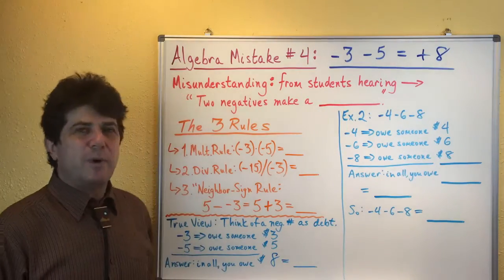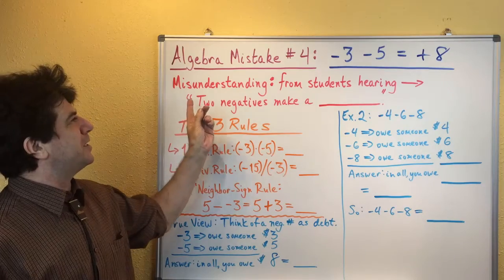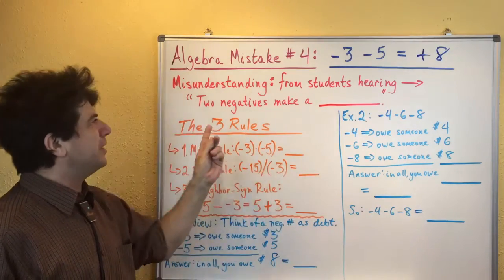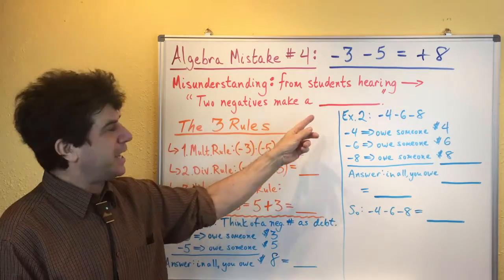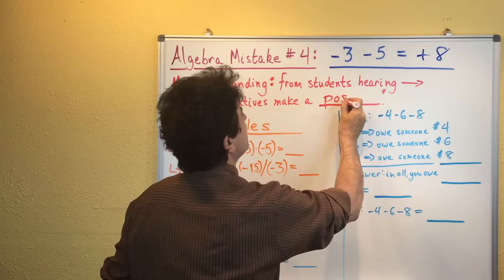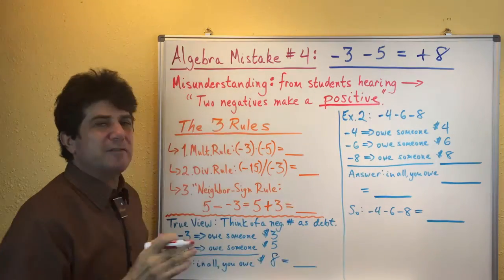Now why would students be tempted to think that? Let's try to understand the misunderstanding. It comes because students hear very often that two negatives make a positive. This is one of those little refrains that students hear in their pre-algebra and algebra classes. Two negatives make a positive.